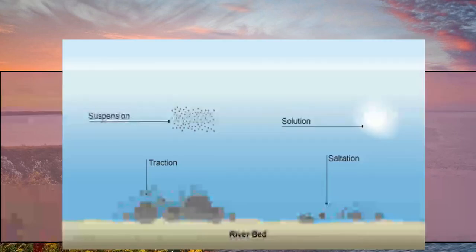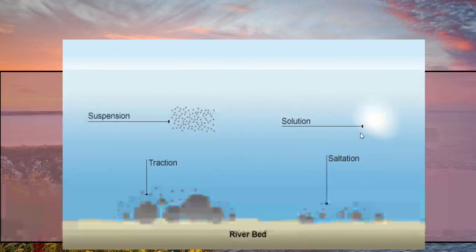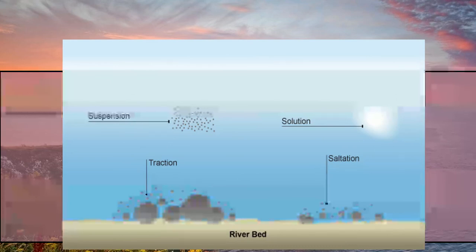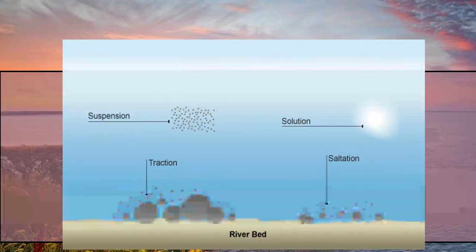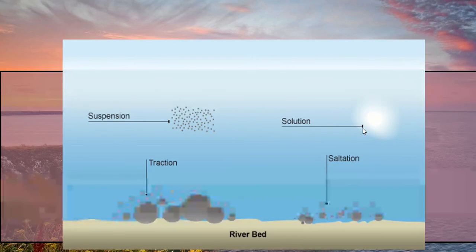All four are on the same diagram, so we're going to work through them little by little. The first one I want to talk about is solution — very similar to the erosional process. Once something is dissolved, it just exists in the water and becomes part of it. It's not something you can see; it's just there. So as the sea or ocean moves, those chemicals in the water are being transported. Quite difficult to get your head around, but hopefully that image helps.